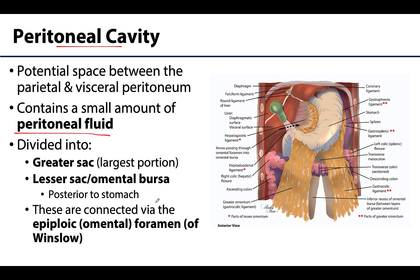The majority of the peritoneal cavity is referred to as the greater sac, and this is the largest portion. It's going to surround most of the abdominal and pelvic viscera. You have to imagine the abdominal wall is also here, and so that space between the parietal peritoneum on the abdominal wall and the visceral peritoneum associated with the organs — that would be the greater sac portion of the peritoneal cavity.